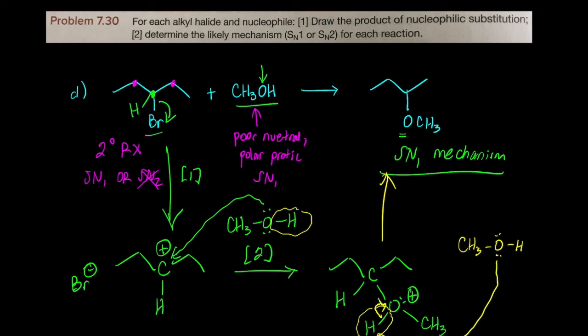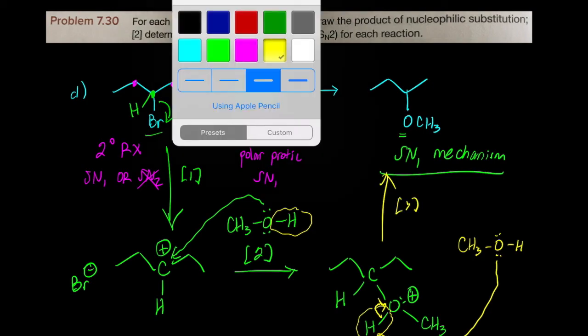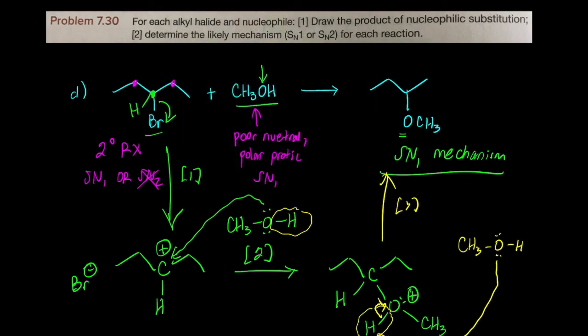That gives you in step three the final product. Let's label these steps here. Step one, we call that elimination. The bromine departs. In step two, we have nucleophilic attack. And step three, we have deprotonation.